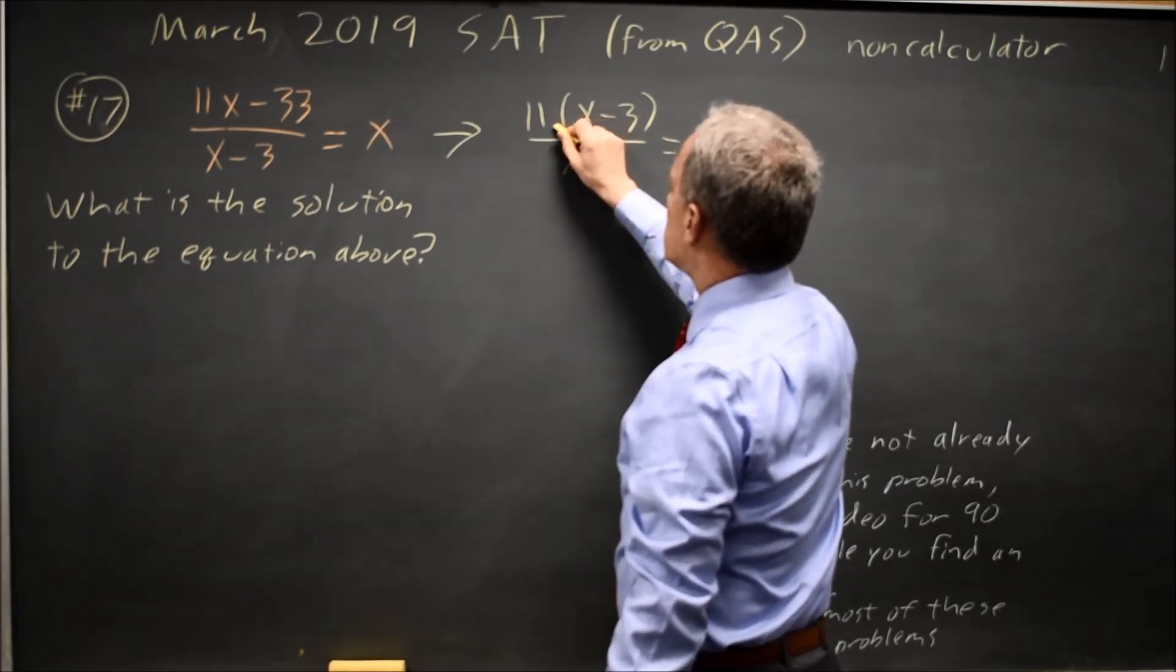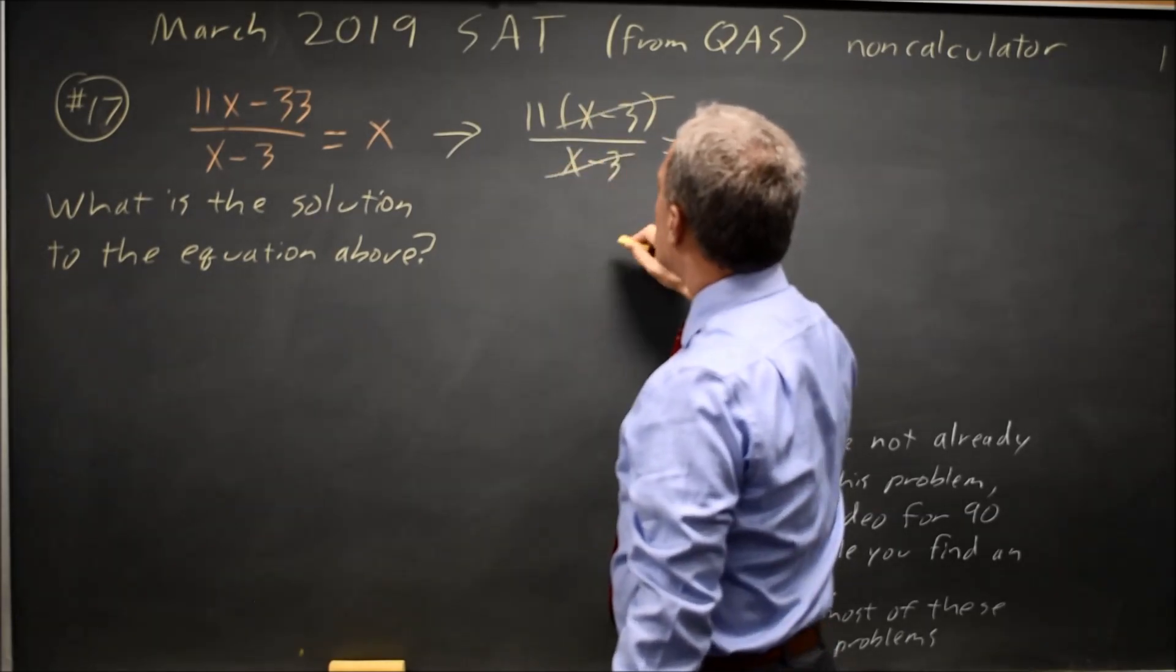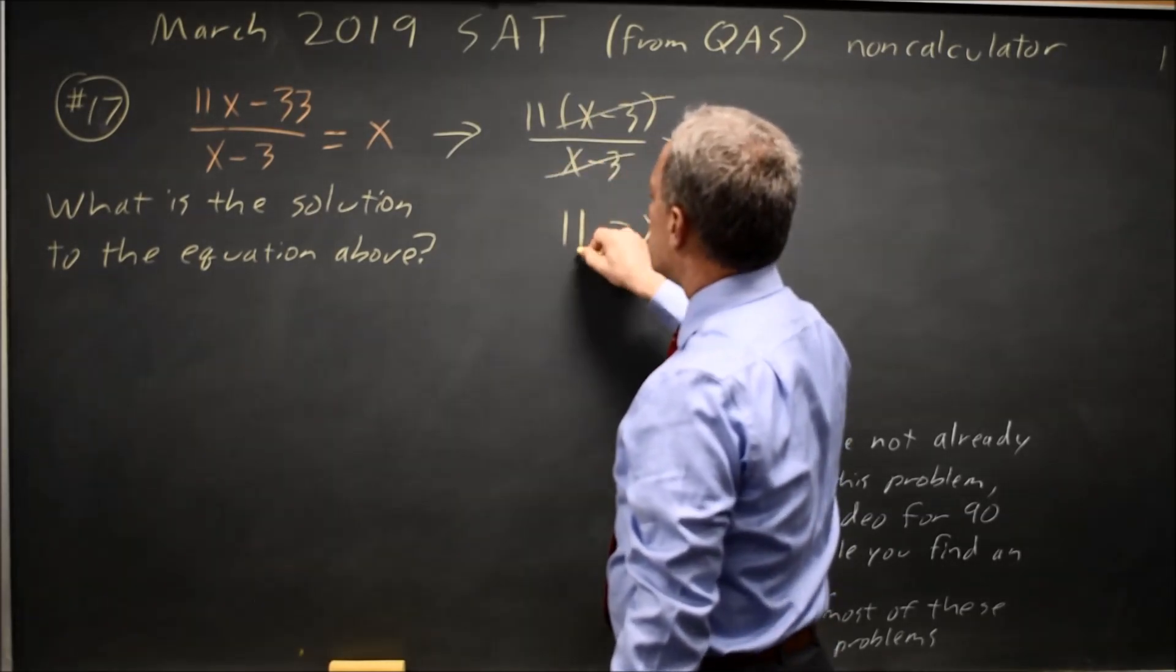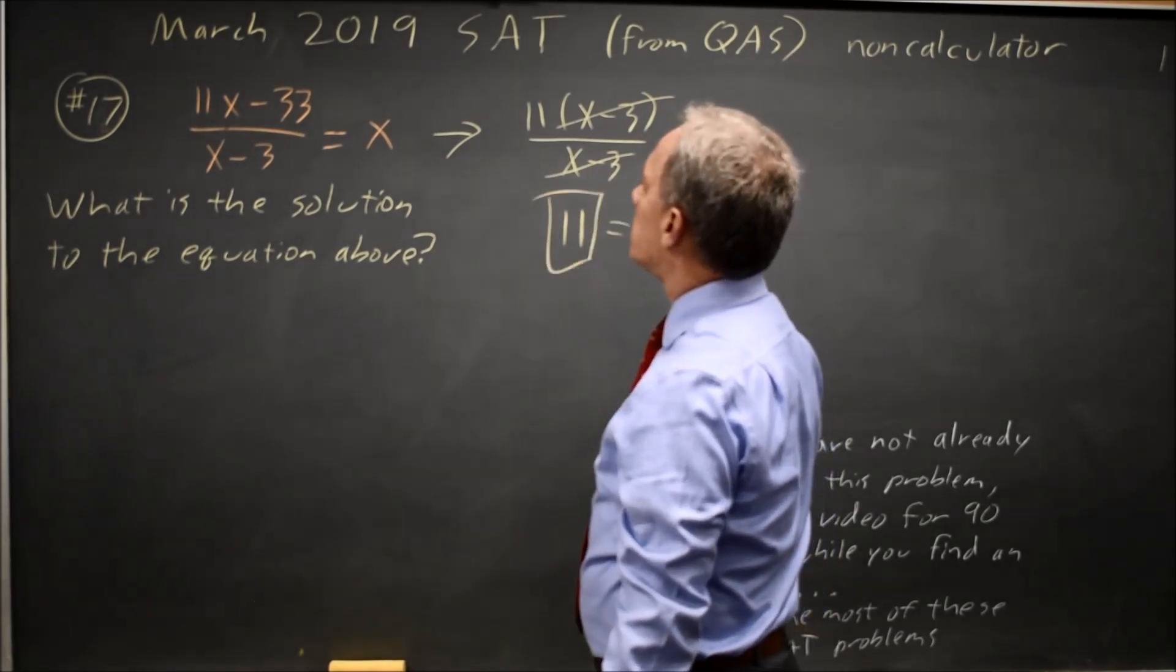Since any expression over itself is 1, x minus 3 over x minus 3 is 1, and simplifies to x equals 11, so the solution would be 11.